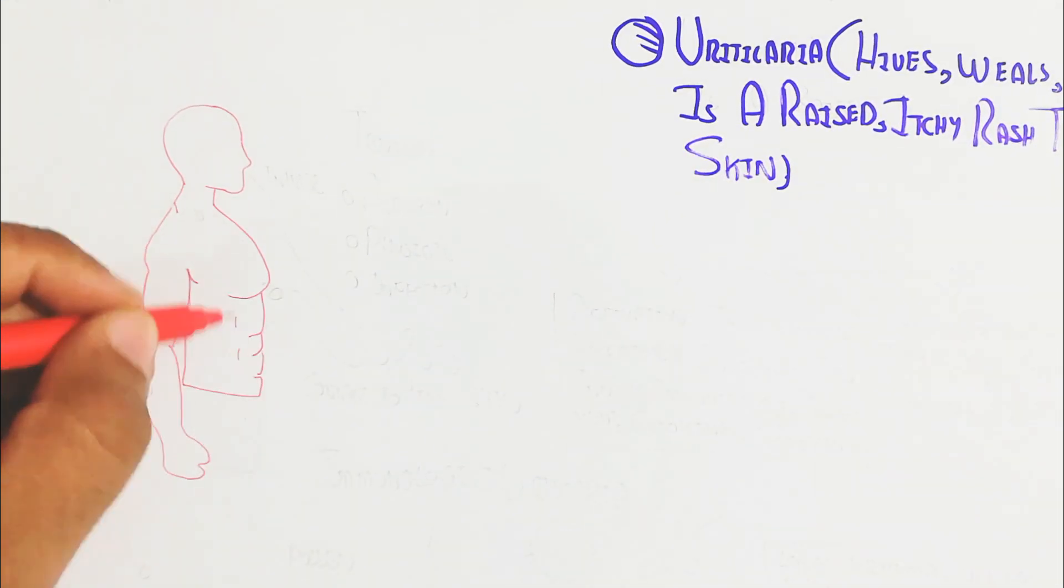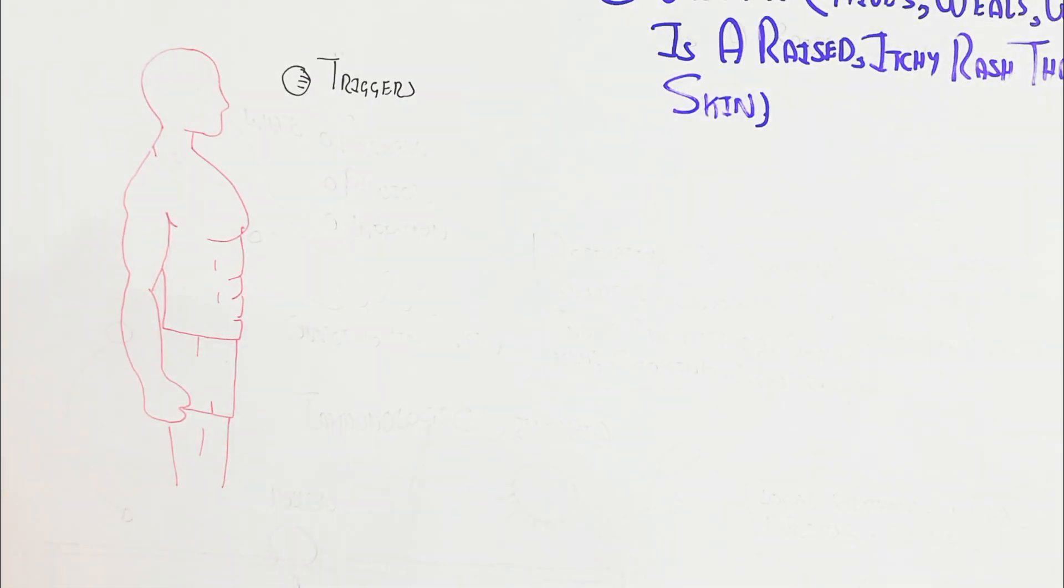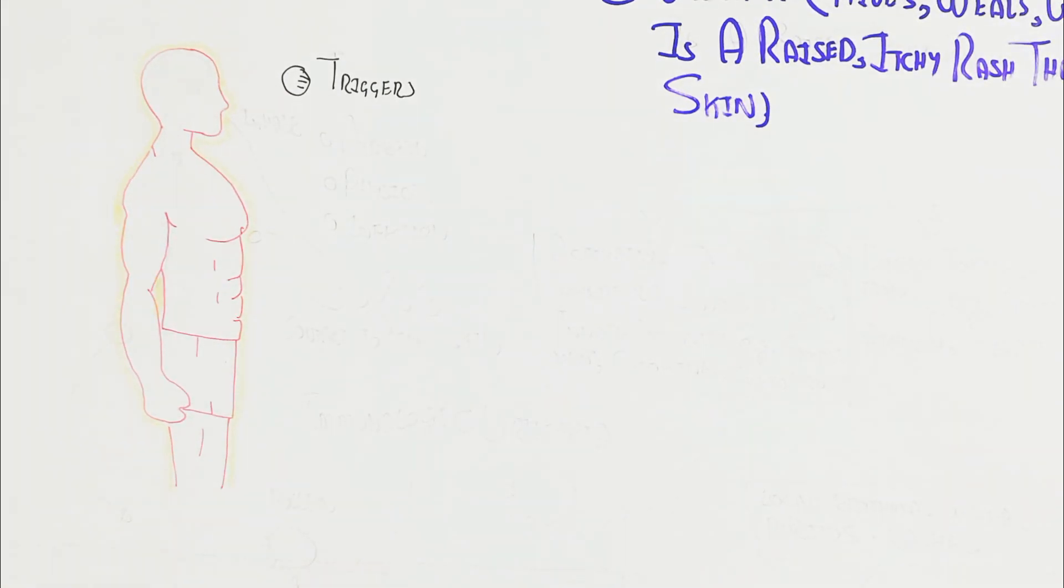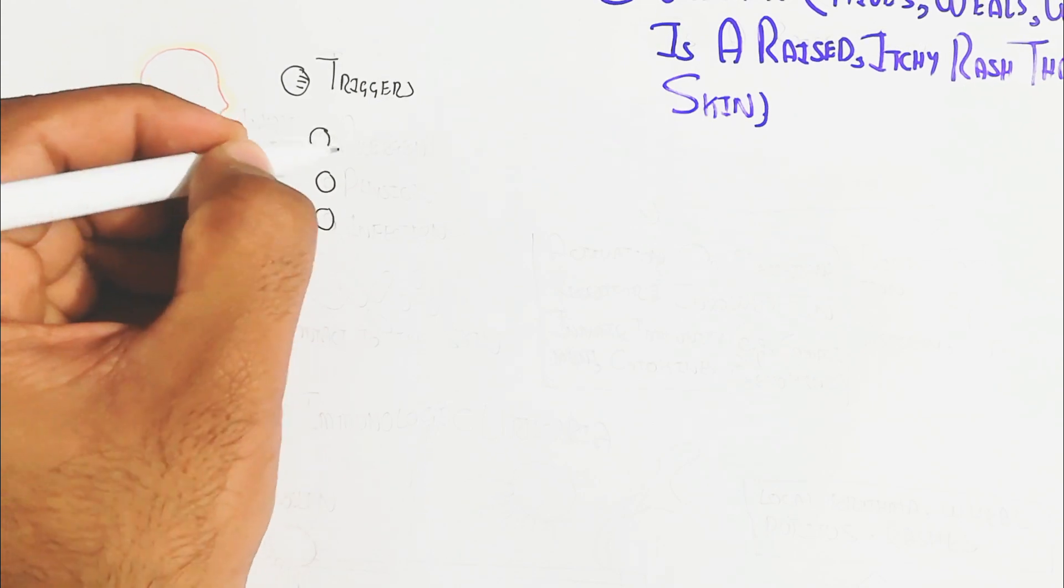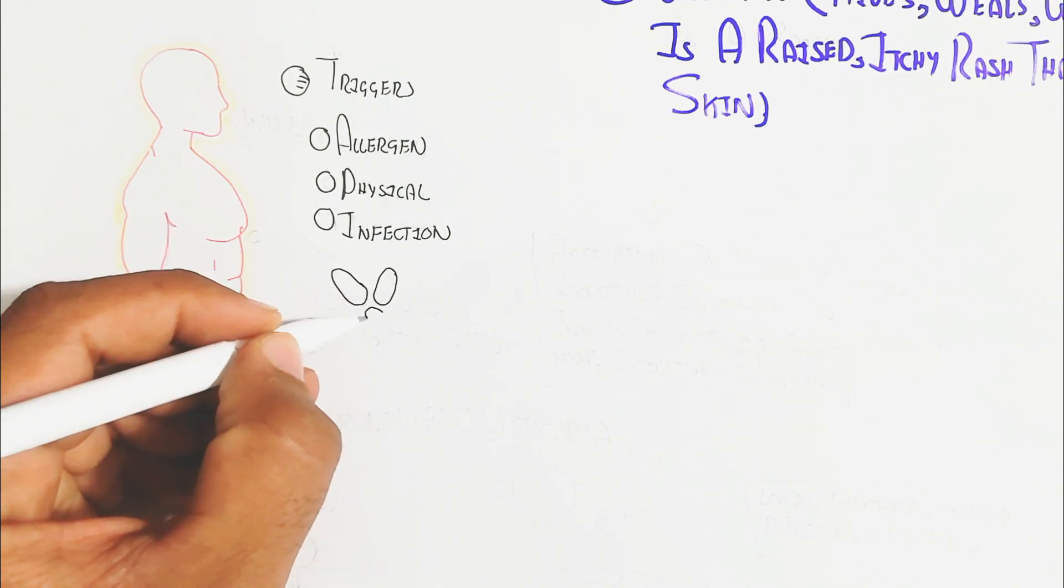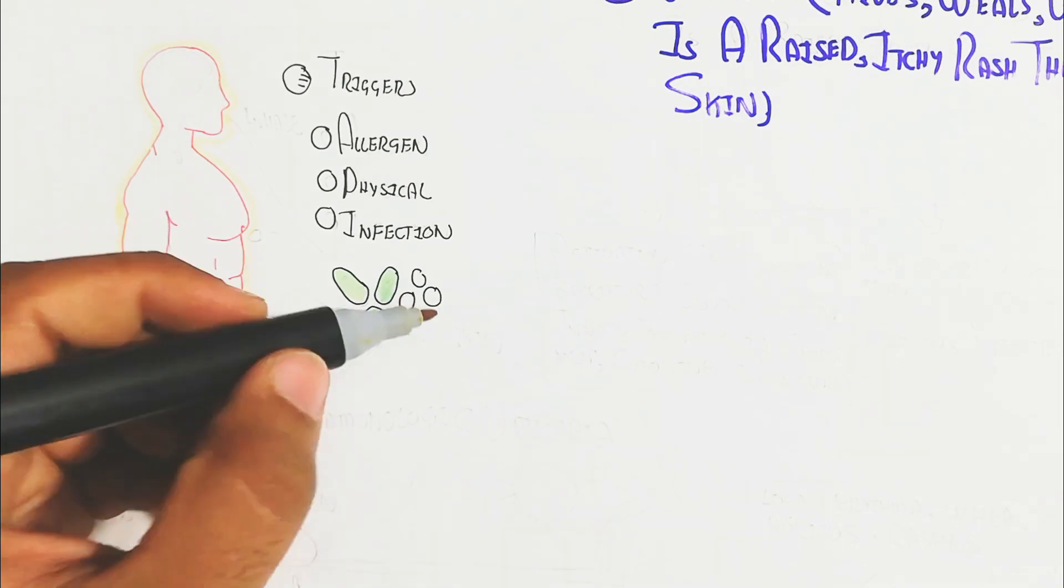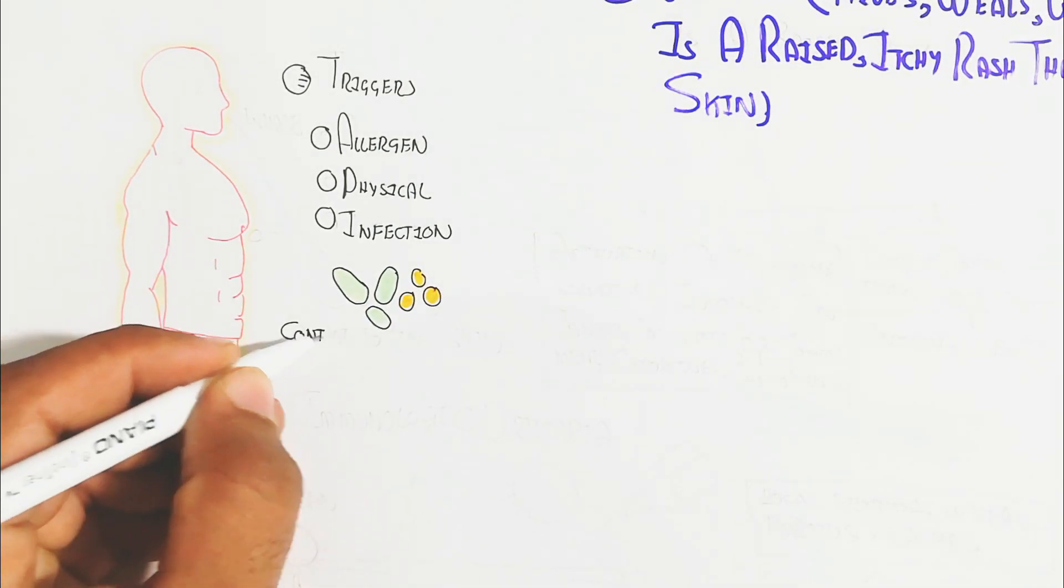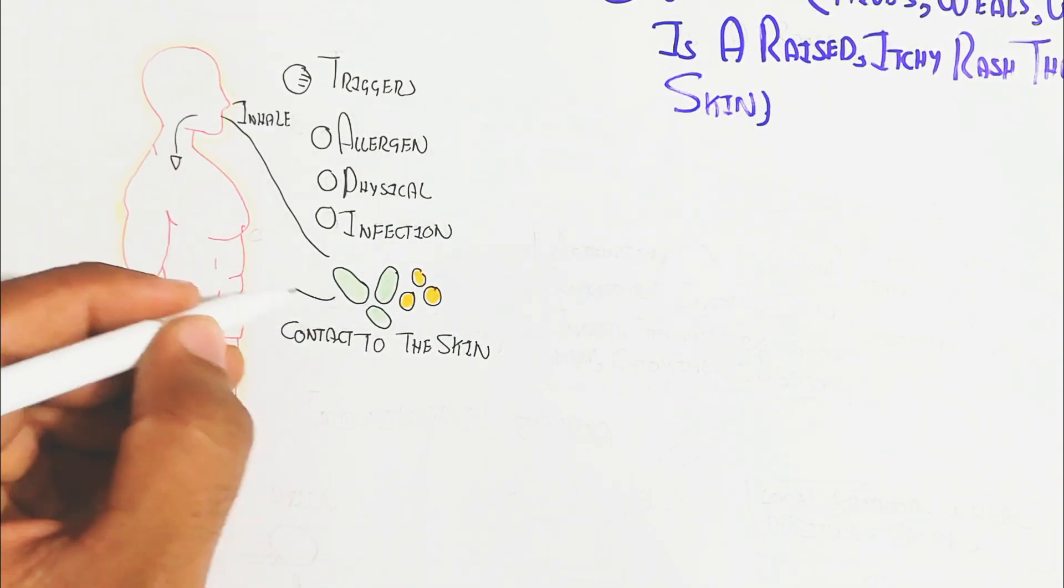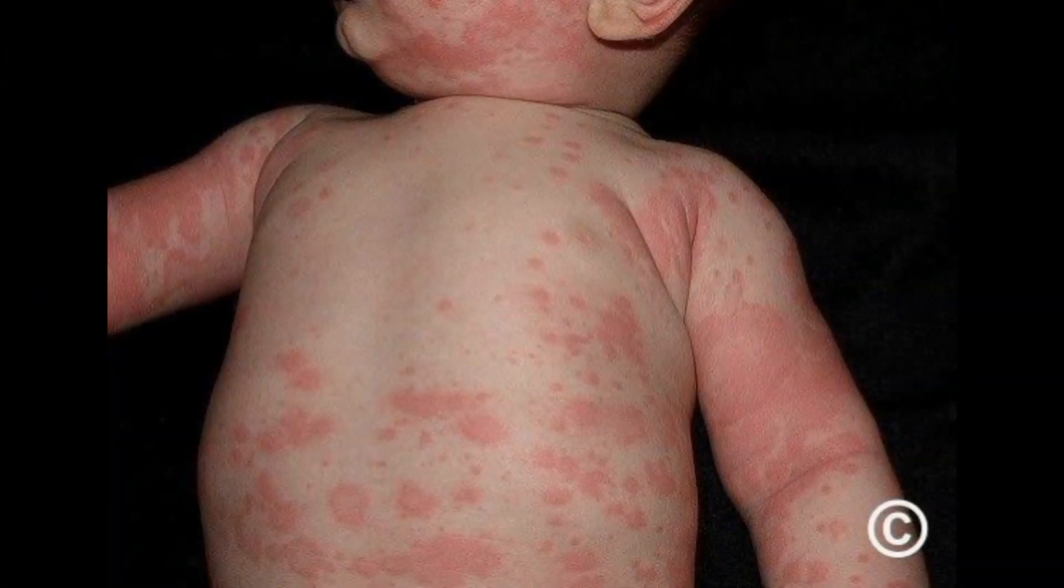Let's begin to understand. The person is affected due to triggers like allergen, physical factors like water, or infection like pathogen. Whenever these triggers are inhaled or contact the skin, it will lead to immunological urticaria.